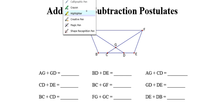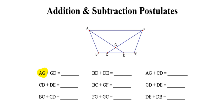In the first question, we want to add the distance between points A and G to the distance between points G and D. There's no line segment notation above either of those, so we're really talking about distance. Because these three points are all collinear, meaning they are on the same line segment, those two distances combined make the distance from point A to point D.